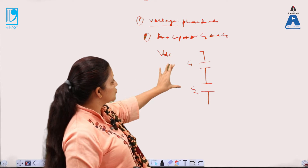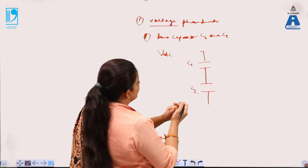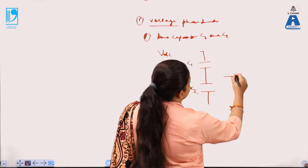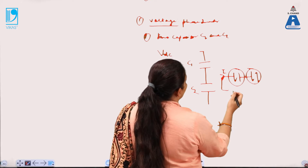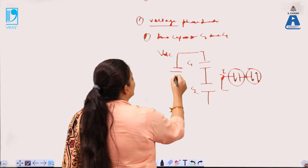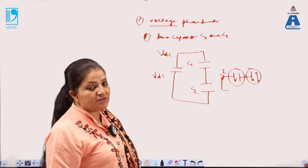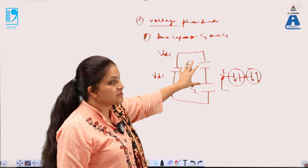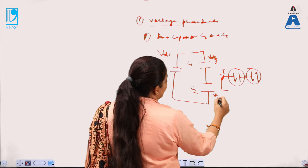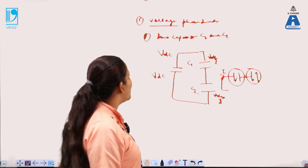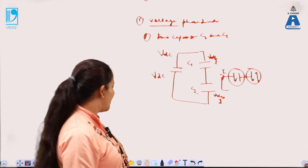The voltage drop across these two capacitors will be considered. If both capacitors are connected in series and a current is flowing through them, then the voltage drop across them will be the same. If the power supply connected to them has the value VDC, the voltage drop across capacitor C1 is VDC/2 and across C2 is also VDC/2. This is called the half bridge converter — because the voltage across the two capacitors is divided by 2.